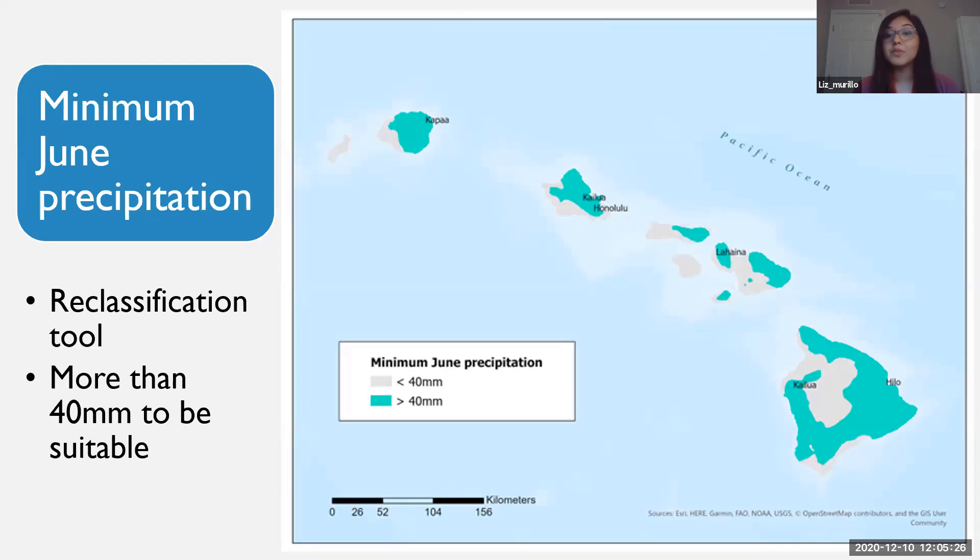Then looking at the minimum June precipitation data, all the areas in green are areas that get at least 40 millimeters of precipitation in June, and that's enough to house mosquitoes. All the areas in gray are ones where mosquitoes would essentially not survive because they don't meet the precipitation requirement.